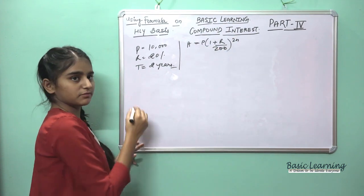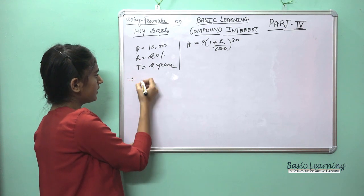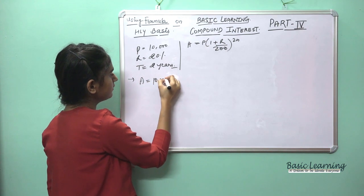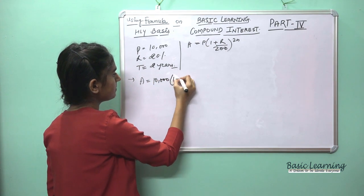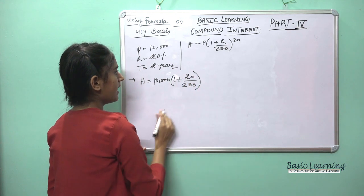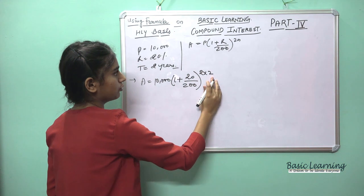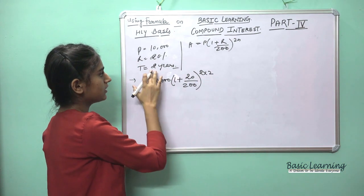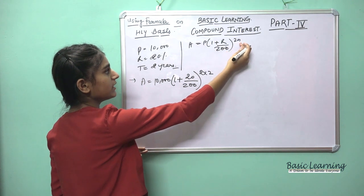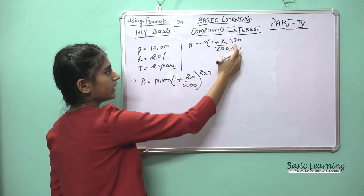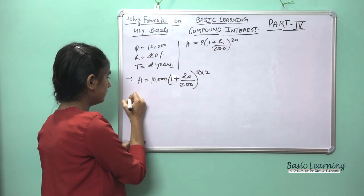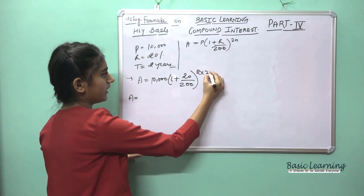So: A = 10,000 × (1 + 20/200)^(2×2). The number of years is 2 and we multiply by 2, which gives the power as 4.